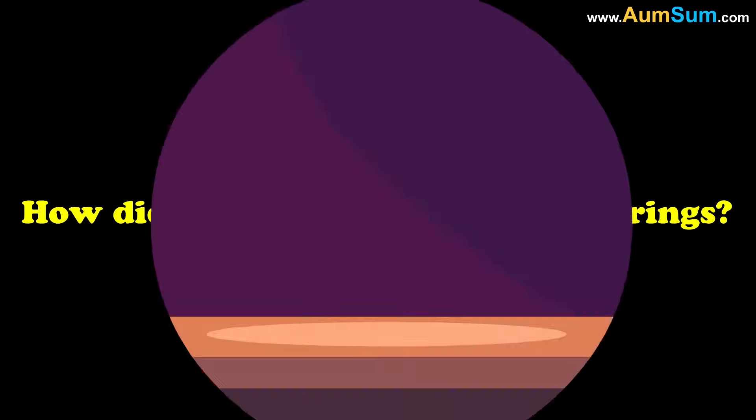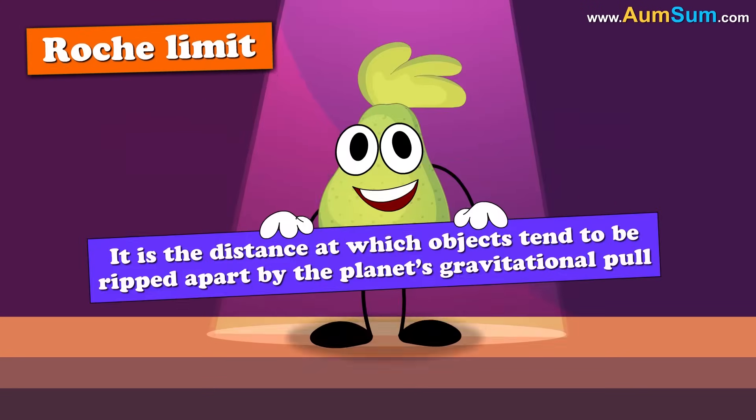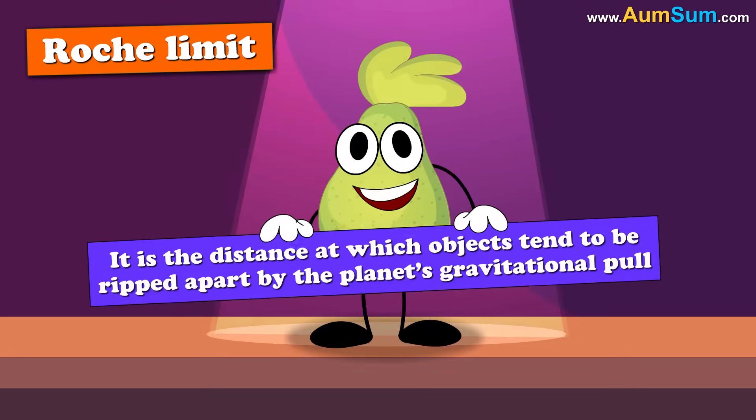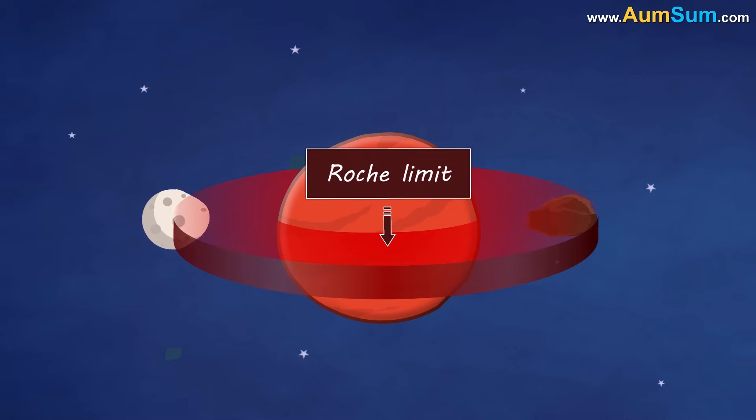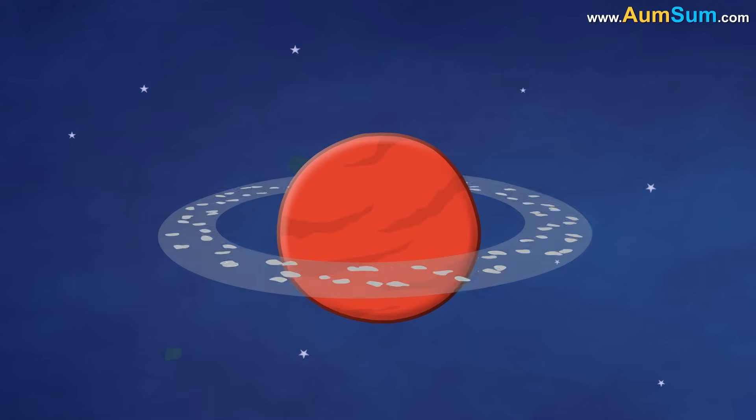So, how did this debris form Saturn's rings? It's got to do with Roche limit. It is the distance at which objects tend to be ripped apart by the planet's gravitational pull. Now, in case of Saturn, it is popularly believed that a celestial body like moon or comet got too close to it and exceeded the Roche limit. Hence, it got ripped apart into pieces, thus forming its rings.